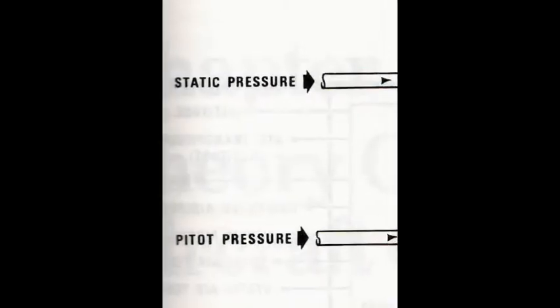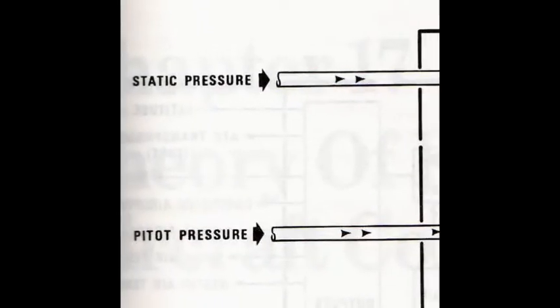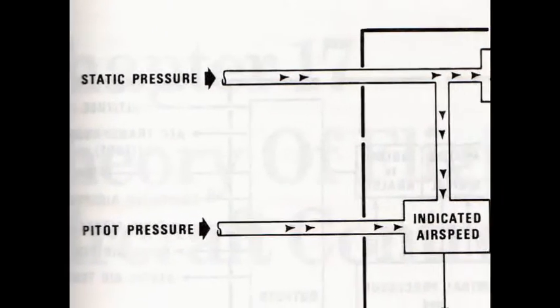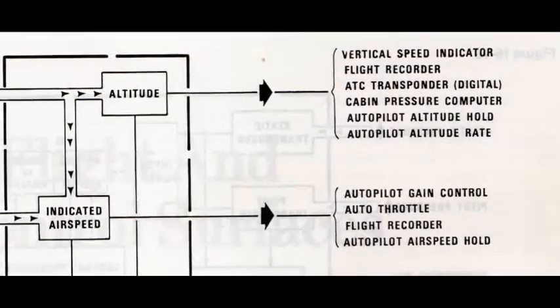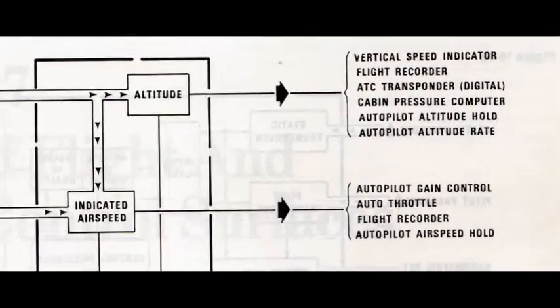Some aircraft have a more advanced form of instrumentation. They call it the Central Air Data Computer. This computer accepts both static and pitot pressure. The airspeed and altitude calculations are done inside the box, and that information is sent to the flight deck, as well as several other avionics systems on board the aircraft.